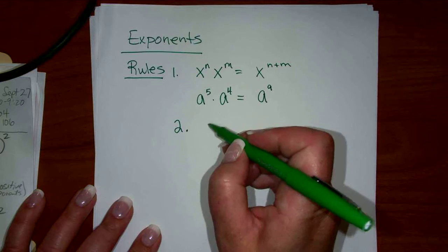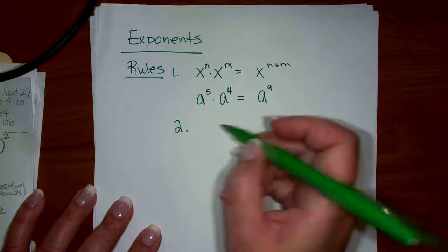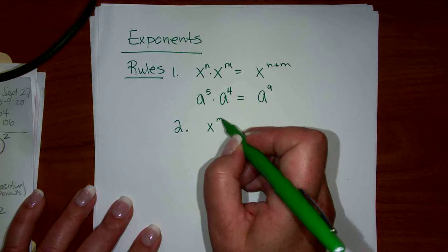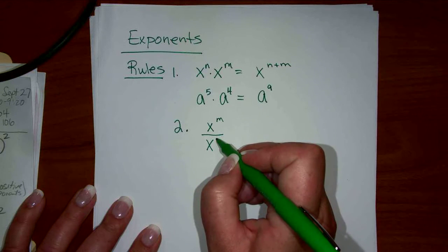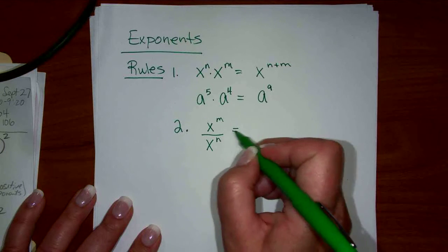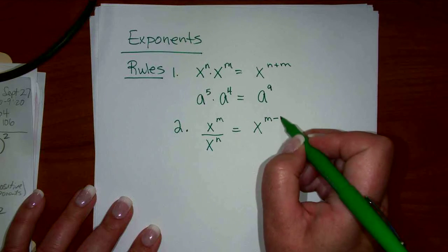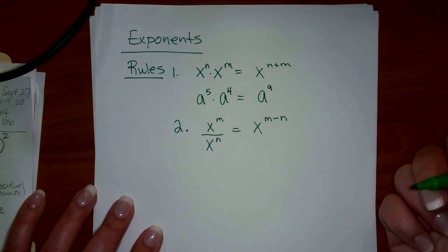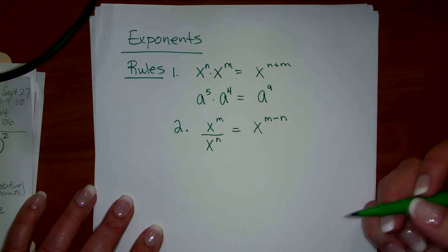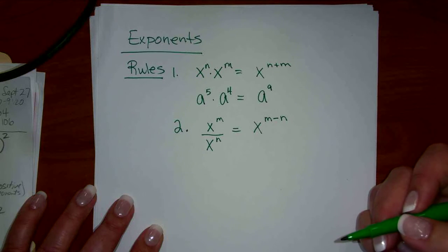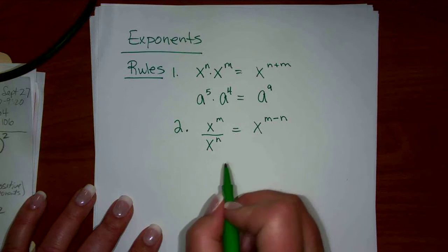These are two bases that are multiplied. That also goes if we have division — the rule is that you take the top one and subtract the bottom. So we talked about this already in terms of canceling. Look at which one is bigger; the smallest amount cancels and whatever you have left over is the answer.